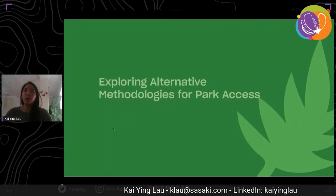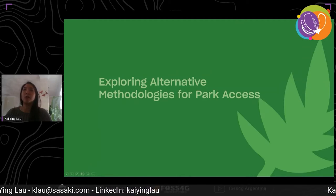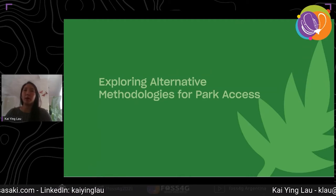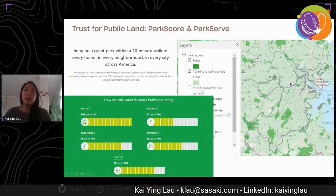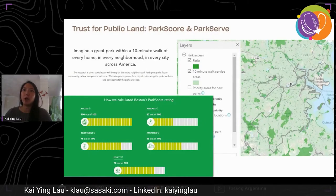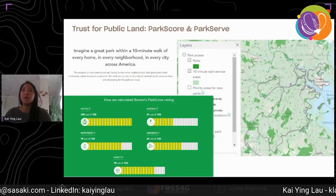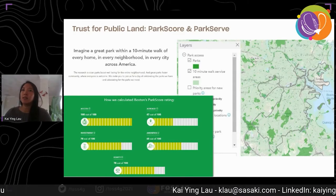We started to explore what alternative methodologies could take into account those factors when measuring park access. The Trust for Public Land is a US non-profit organization with a mission to create parks and protect land for people, ensuring healthy livable communities for generations to come. What the TPL has done is expanded this to include criteria such as park acreage, investment, amenities, and equity.